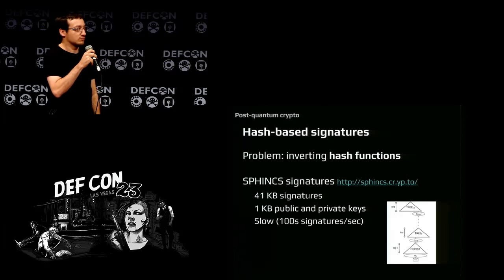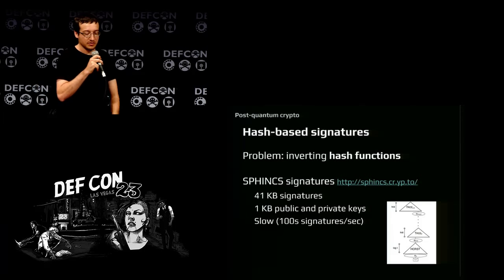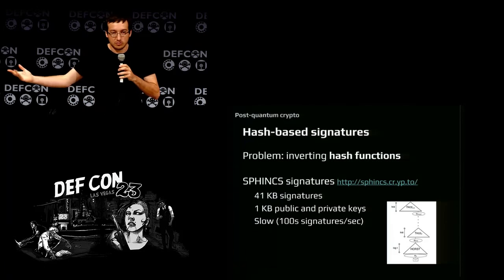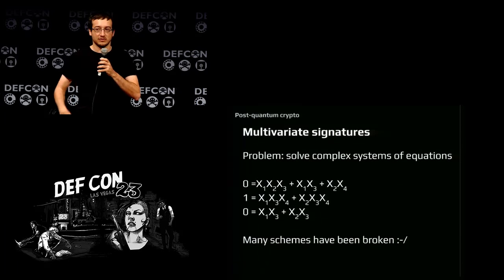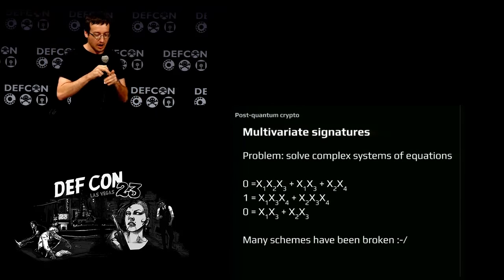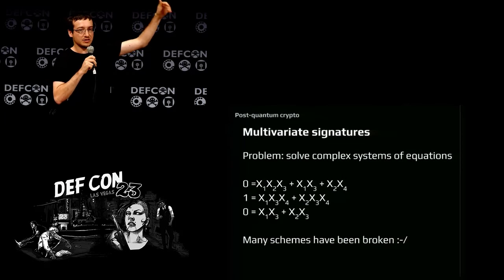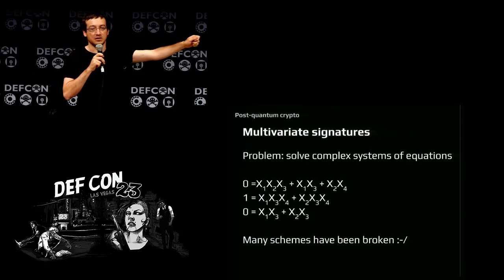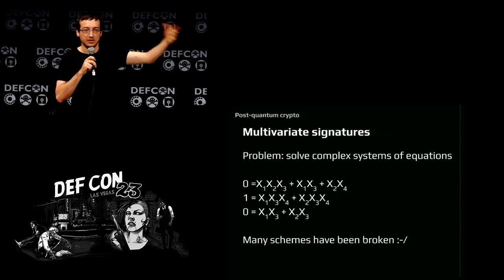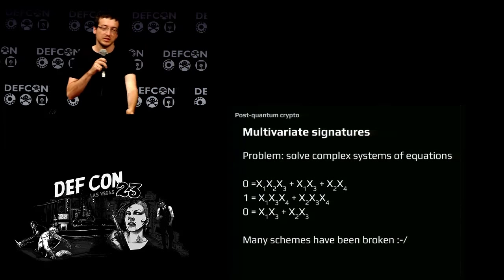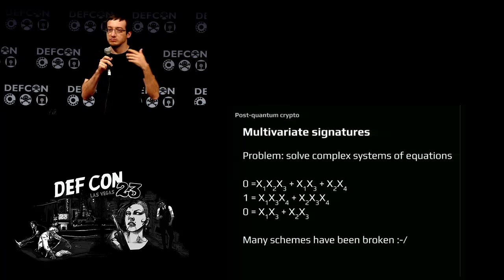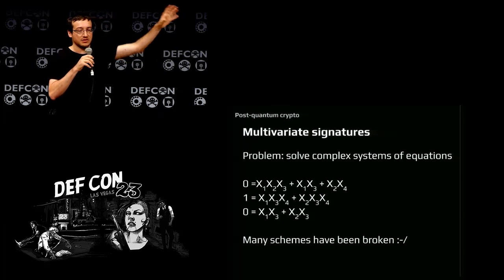Instead of thousands of operations per second, hash-based signatures do more like 100 — but it works. The second family is multivariate signatures: equations with many variables combined through multiplications, not just additions. Linear systems are easy to solve via Gaussian elimination, but once you introduce multiplications a random system becomes NP-hard. The catch is that to use it in reasonable time you need structure, and that structure is exactly why some schemes in this family have been broken.